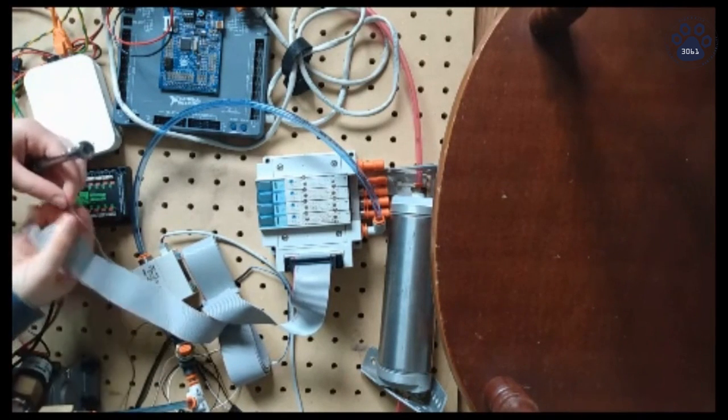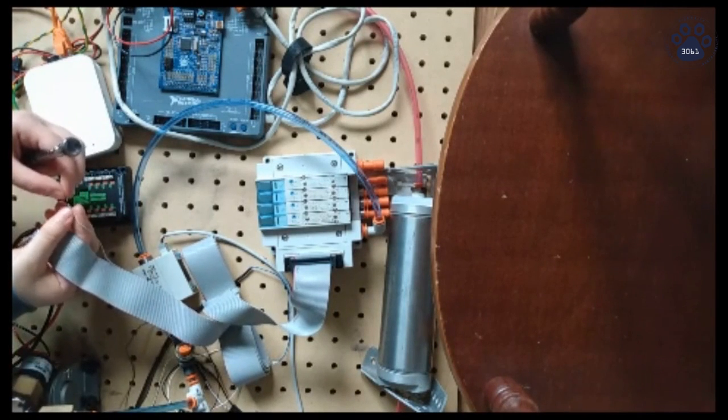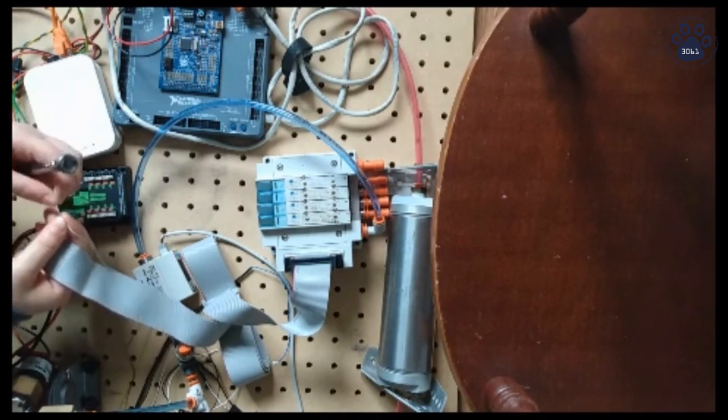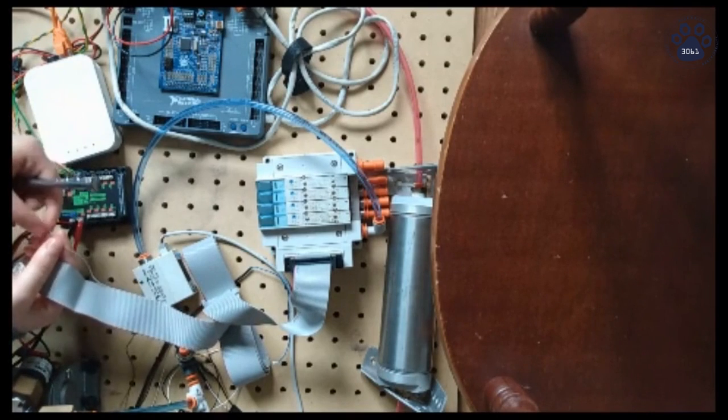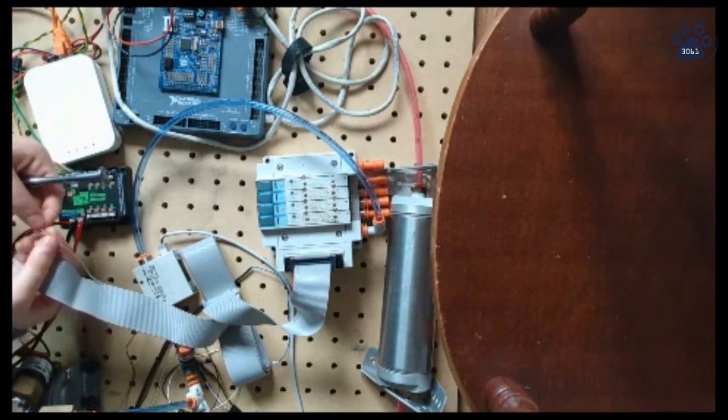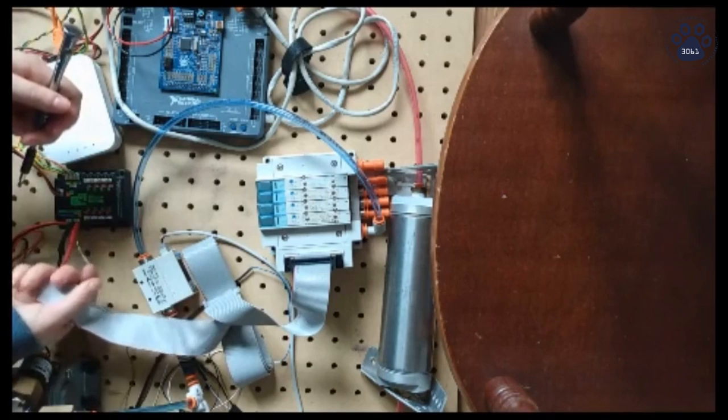So you're going to strip your wires about half of a centimeter, and you're going to make sure that all the wires inside of the insulation are twisted neatly together so that none of the little wires on the inside are sticking out in different directions.